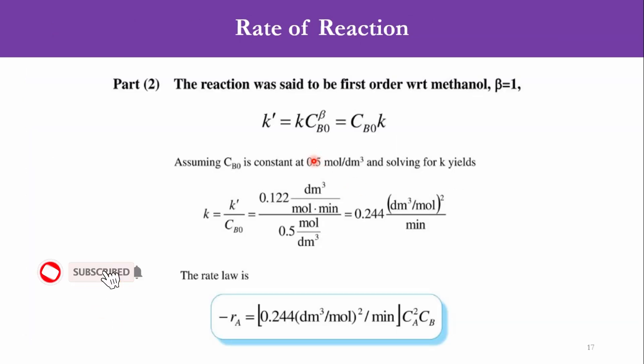So coming to the final part, k' = kCA·CB0^β. And β is 1 as we have said, so it will be CB0·k. Now we know the value of k' we know the value of CB0, so accordingly k = k'/CB0 which is 0.122 divided by 0.5, so it will be 0.244. And finally we can write the rate law as -rA = kCA²CB where k is 0.244. It will be CA² because the system is second order with respect to specie A and first order with respect to specie B.